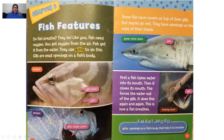Down here we have — by the way, this is a snapper and this is a grouper. We see that the grouper has his gills open, and this is the gills inside the cover. That's what the gills look like from the inside.